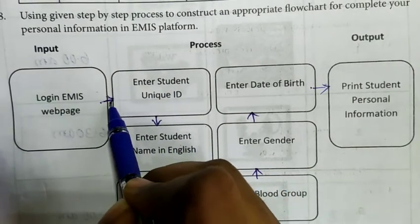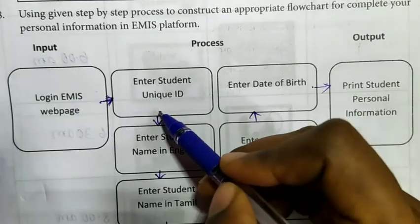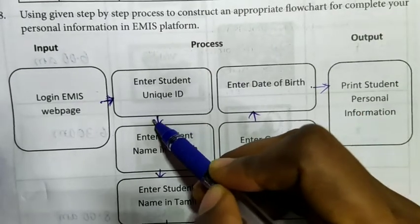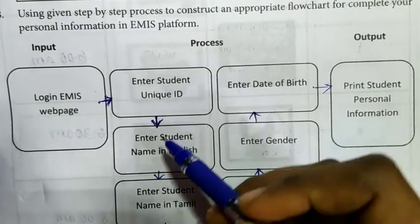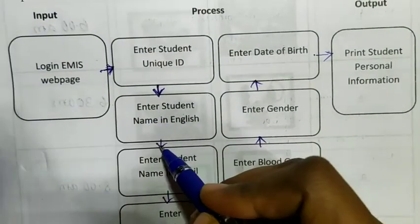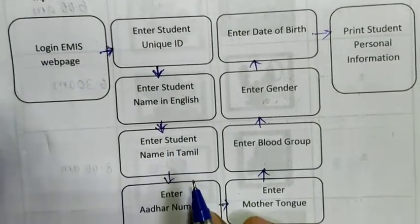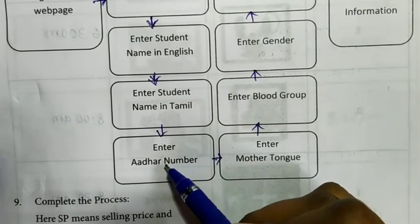Connect with flowline, this arrow mark. Then next, enter student name in English. Then enter student name in Tamil. Next, enter Aadhar number in EMIS portal.